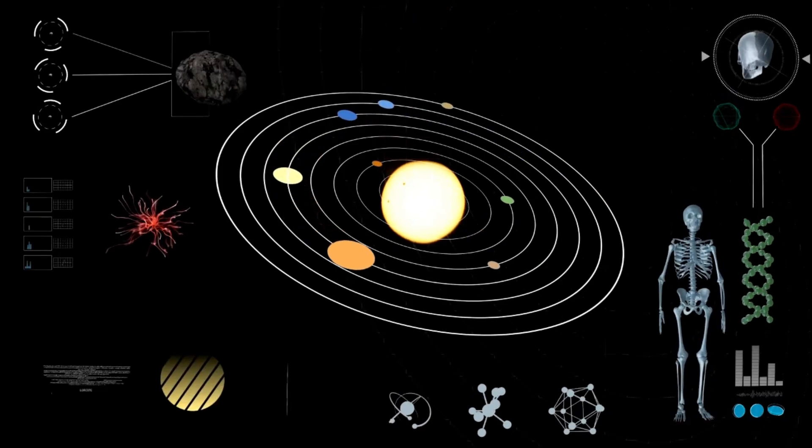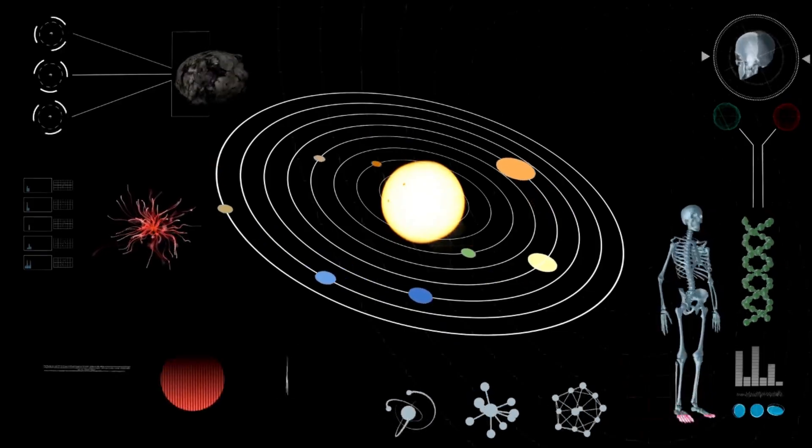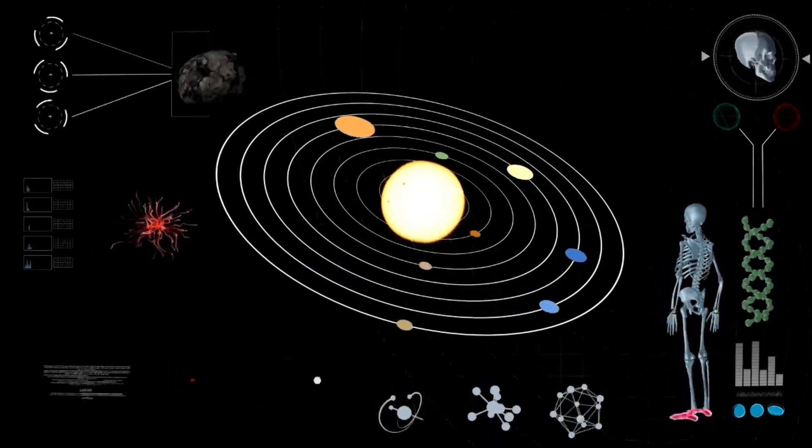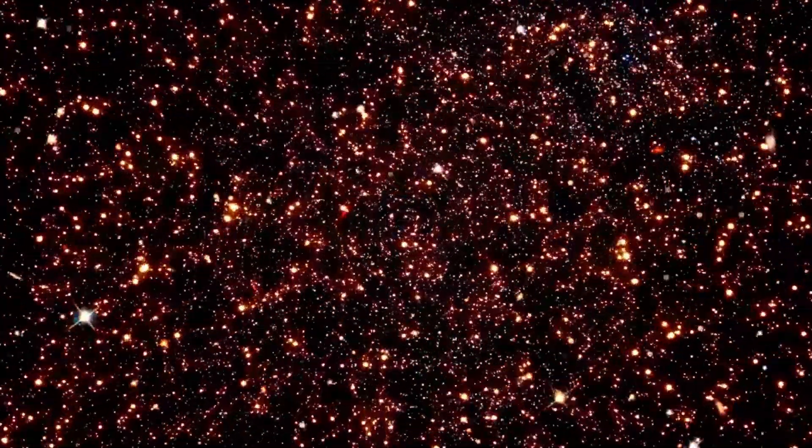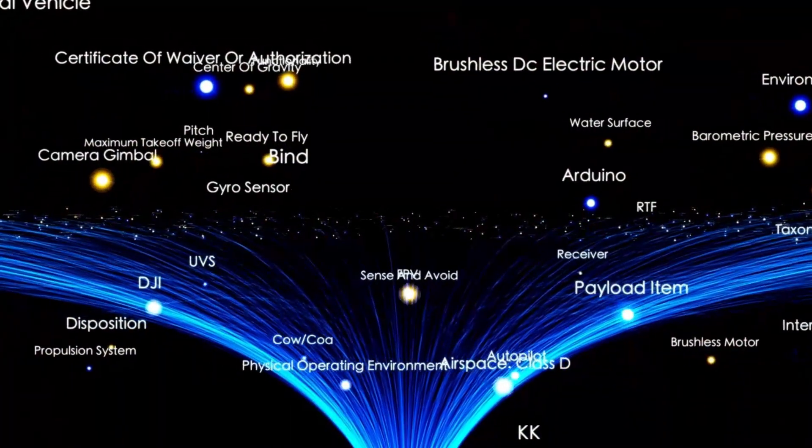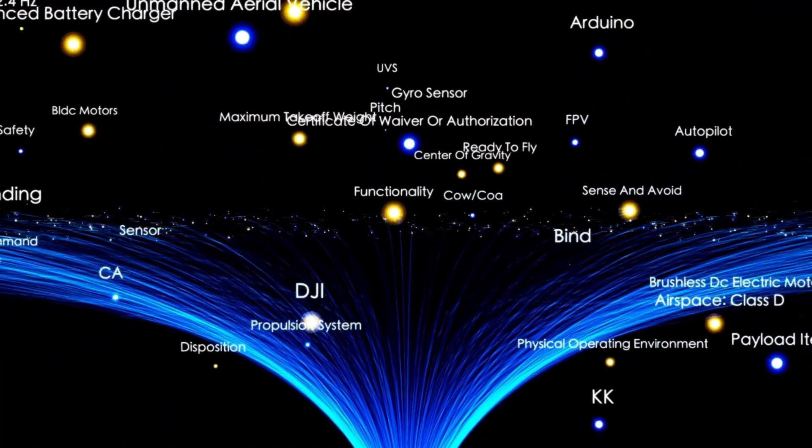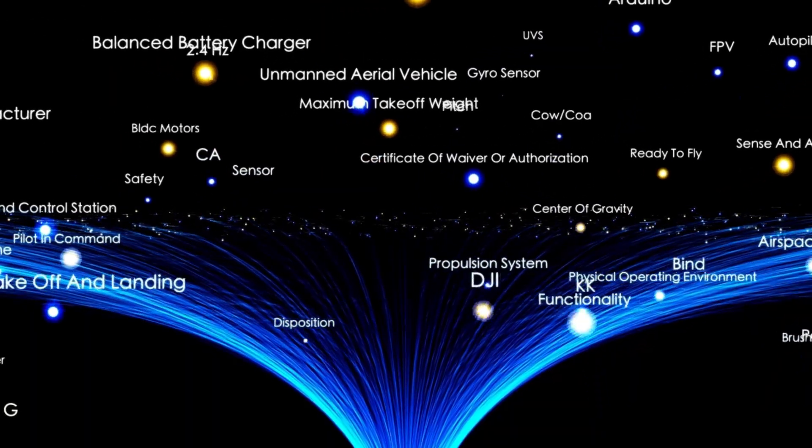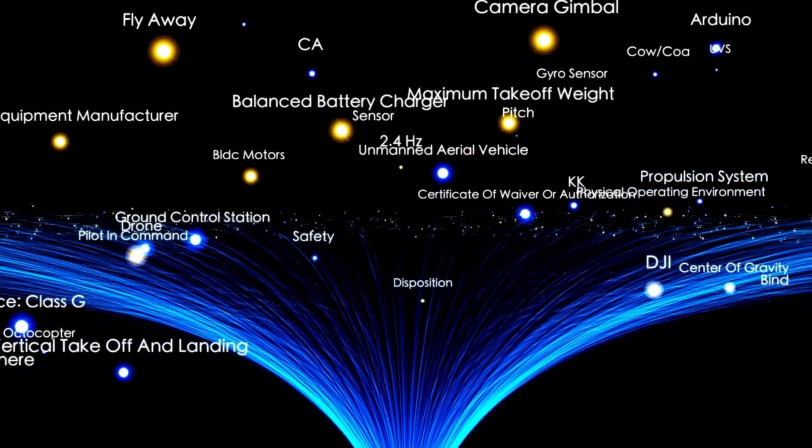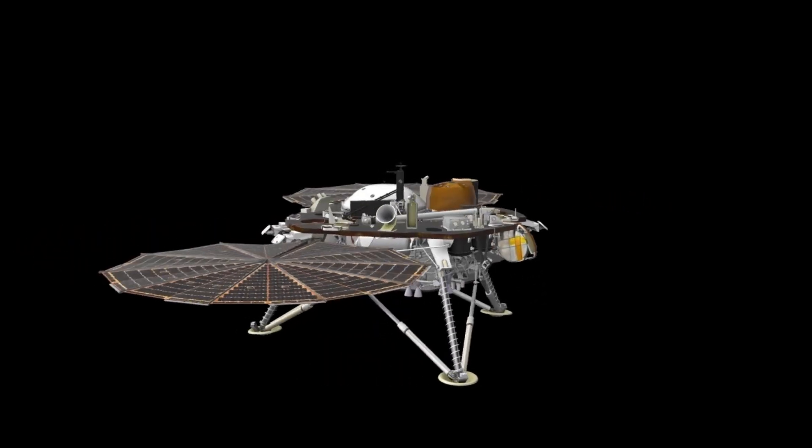Rekindled public interest in humanity's longest-running space mission has stirred awe and curiosity. For decades, we've believed our knowledge of the solar system was nearly complete, a finished puzzle where only a few pieces might still be missing. But space, in its vast and humbling way, constantly reminds us that our understanding is merely scratching the surface. Just when we think we've uncovered every mystery, new discoveries remind us how little we truly know.